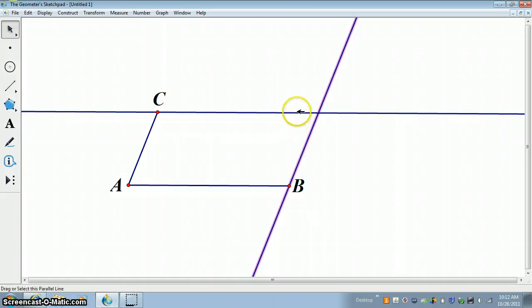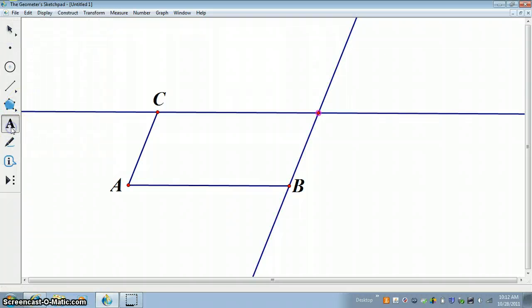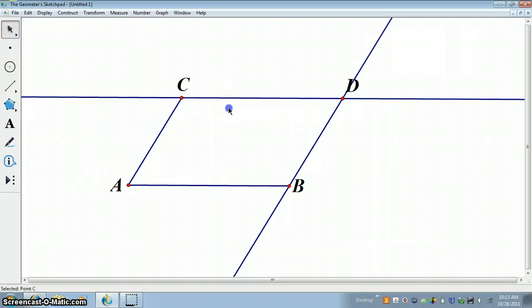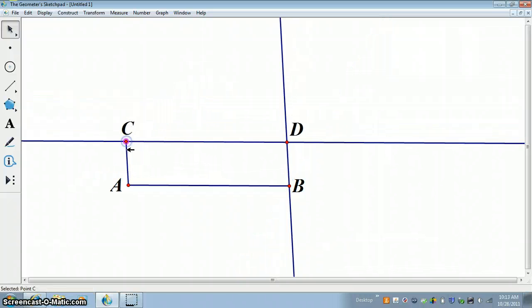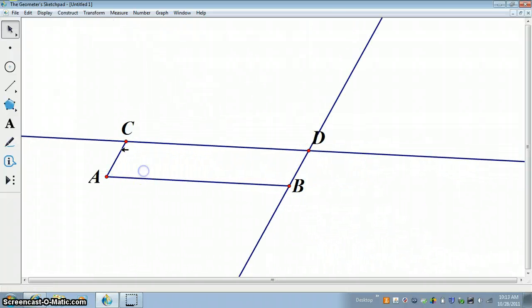So now we have the opposite sides parallel, and I just need the point of intersection, which is going to be point D. So here we've got opposite sides parallel, and I'm going to just prove this to you by dragging around here to see that we still have a parallelogram. So this is still a parallelogram. Opposite sides are still parallel.